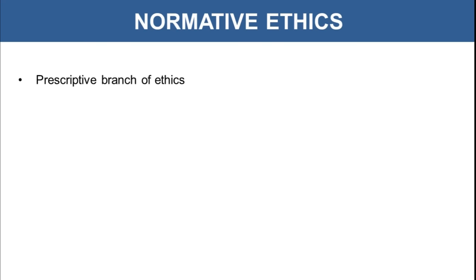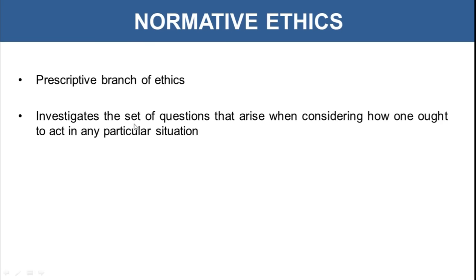Coming to normative ethics. As we saw, metaethics was descriptive, but normative ethics is a prescriptive branch of ethics. It prescribes how one needs to act if you want to be right — what is morally correct and how one should act in a particular situation. It presents the difference between good and bad, right and wrong. It investigates the set of questions that arise when considering how one ought to act in any particular situation. In normative ethics, it would prescribe: do not steal because it's not good, do not lie because it's not good, do not break promises because it is unethical. So normative ethics gives you judgments built on prior experiences in society — it tells you what ought to be done.